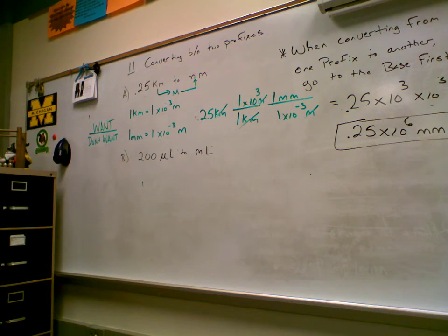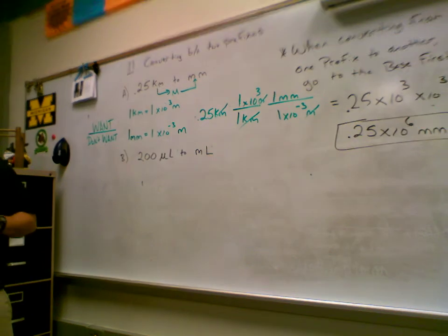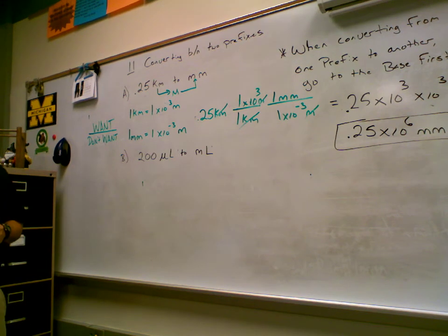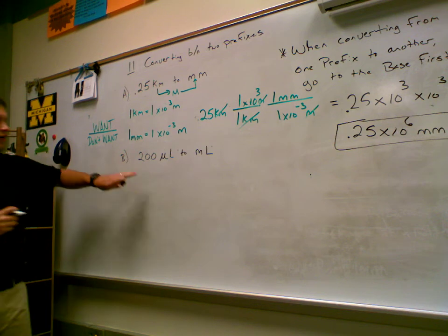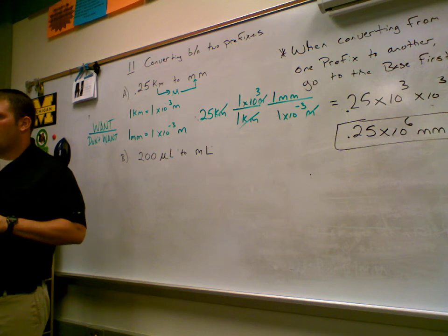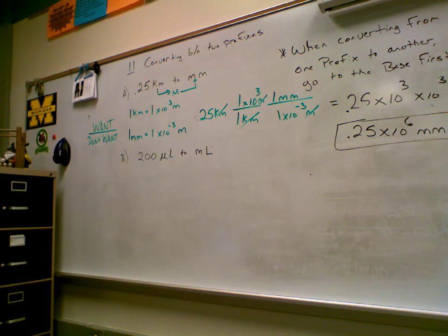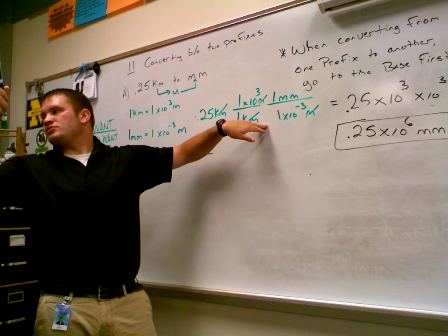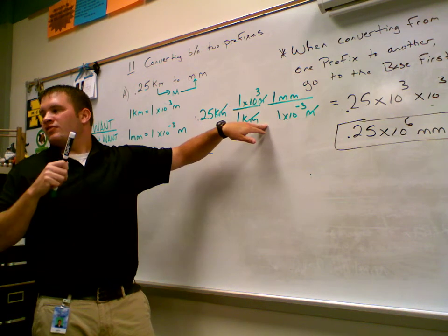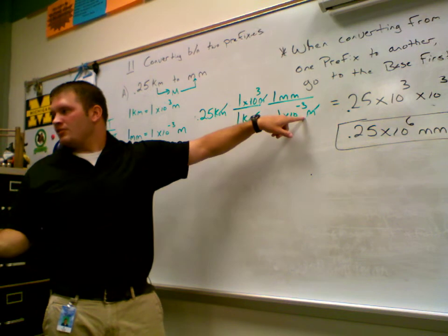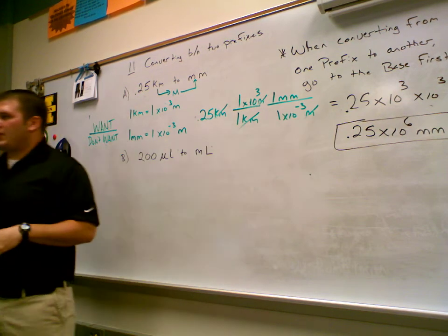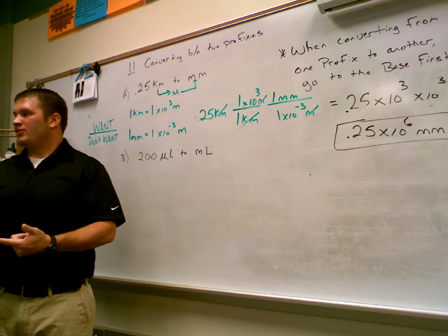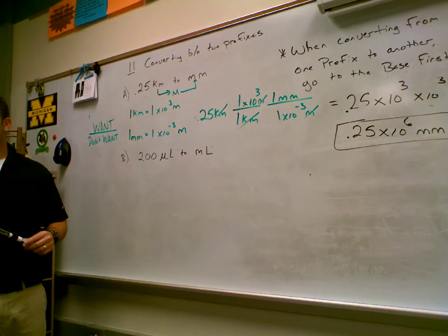Any questions? A student asks why the negative exponent becomes positive. Because we're dividing by the exponent — when it moves to the top it becomes positive. Negative three means dividing by ten three times, so dividing by dividing-by-ten cancels out and makes a multiply. Good question.